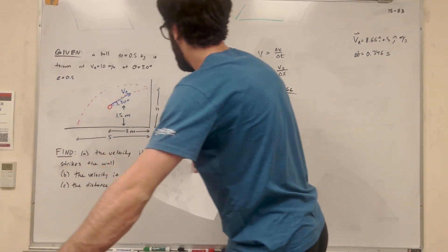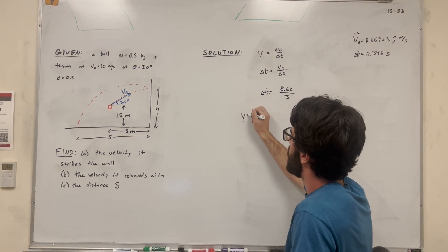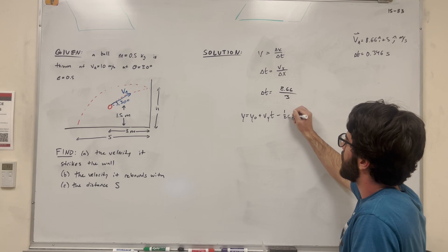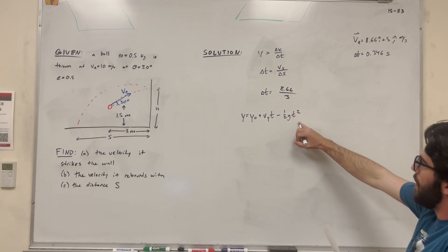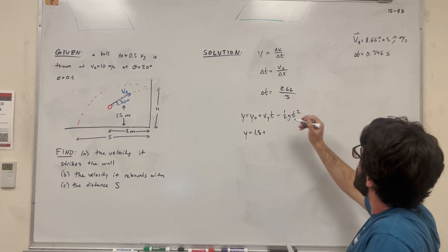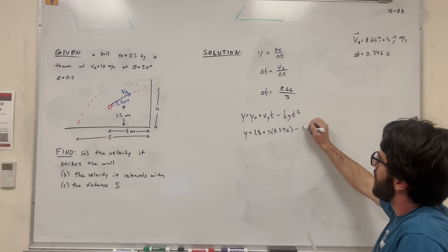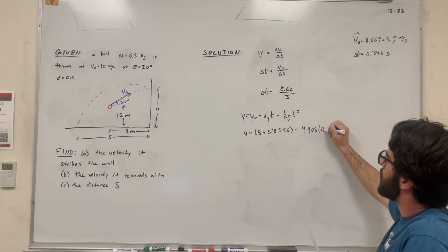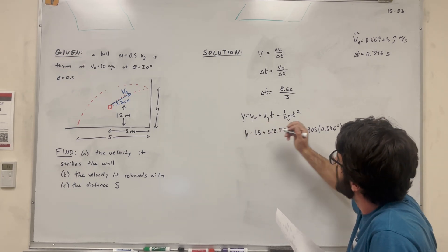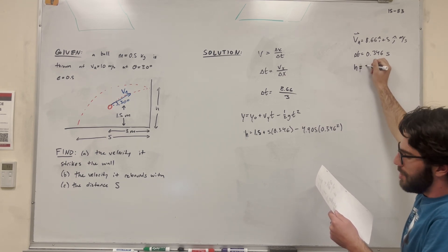So we have that important piece of information. We can now find the change in height using the equation: y equals y-naught plus velocity-y times t minus one-half gravity times t squared. We're trying to find that final height. Plugging in: initial height 1.5, plus velocity in the y-direction 5, times time 0.346, minus 4.905 times 0.346 squared. We find that the height at which it hits the wall is 2.64 meters.